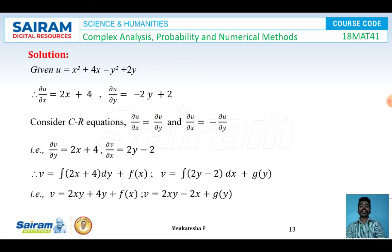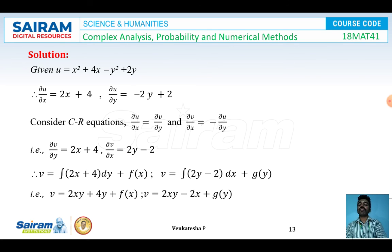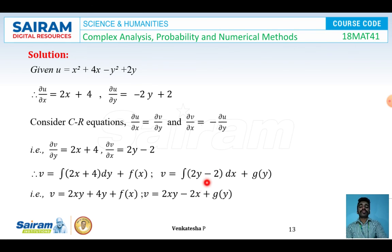Using CR equations, ∂v/∂y = ∂u/∂x = 2x + 4 and ∂v/∂x = -∂u/∂y = 2y - 2. Integrating ∂v/∂y with respect to y: v = 2xy + 4y + f(x). Integrating ∂v/∂x with respect to x: v = 2xy - 2x + g(y).